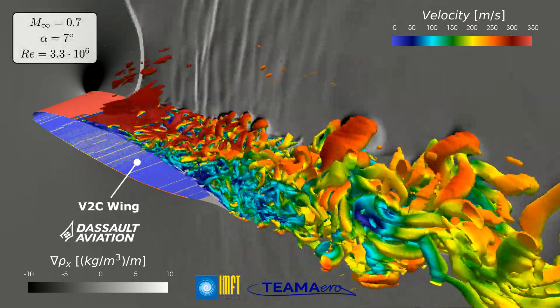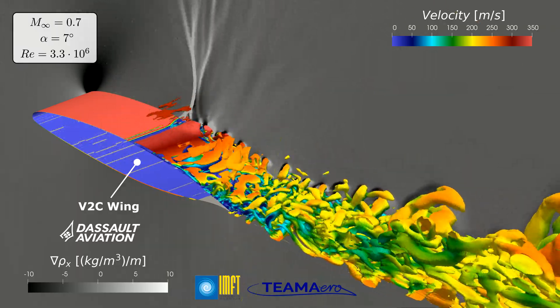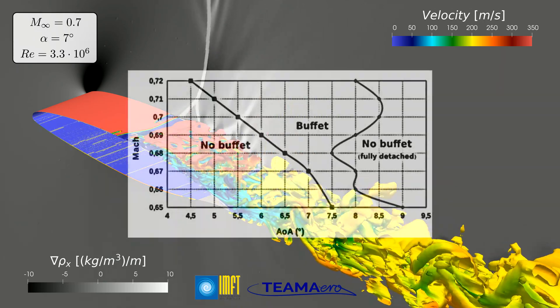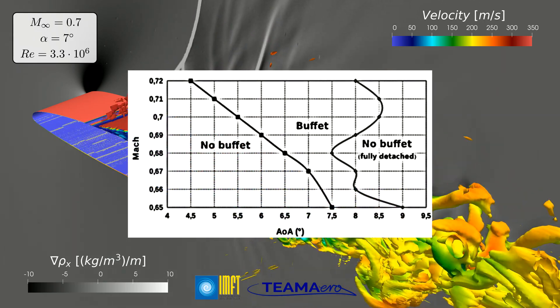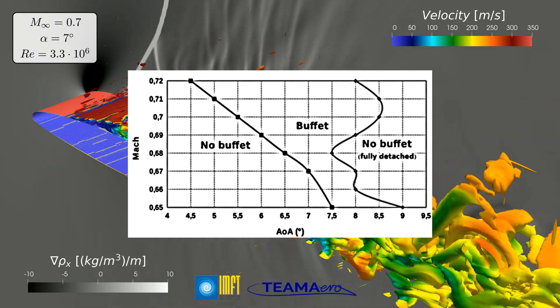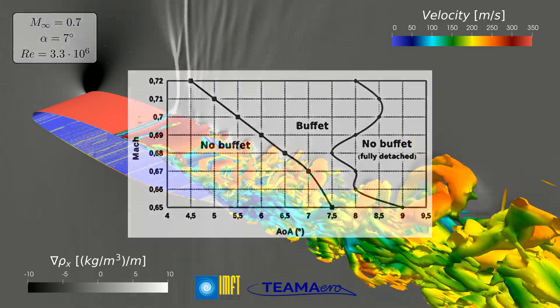The study case that you're looking at corresponds to simulation around the B2C wing designed by Dassault Aviation under heavy buffet conditions. This flow scenario occurs in wings at transonic speeds when critical conditions are met, which typically depend on a combination of the freestream Mach number and the flow incidence, also known as angle of attack.